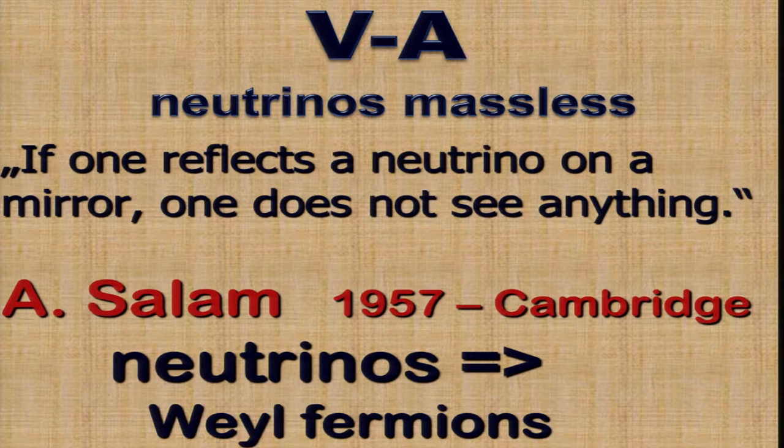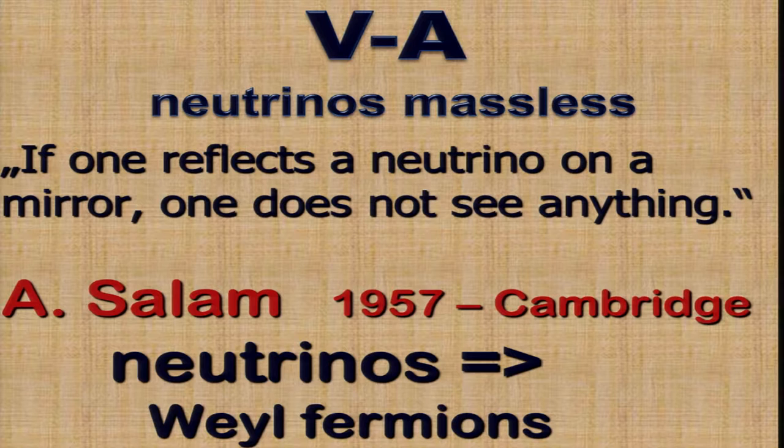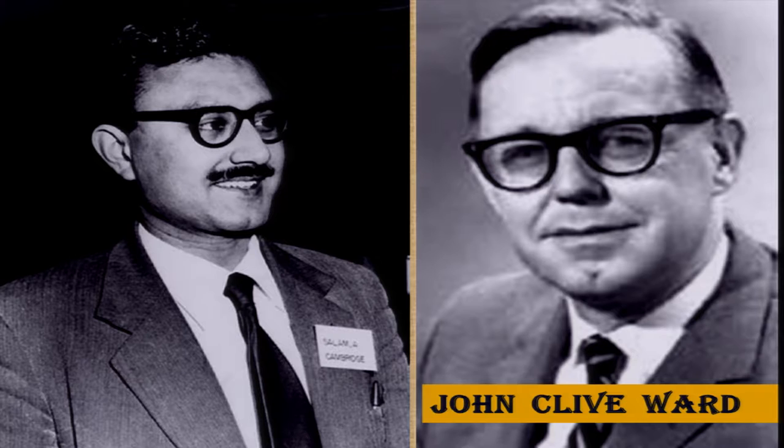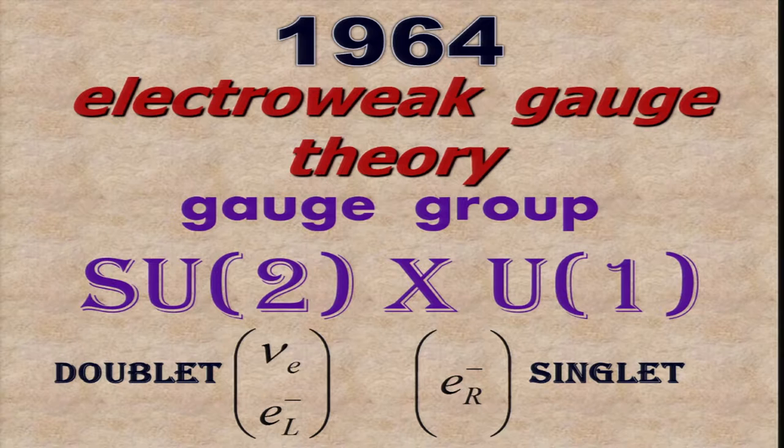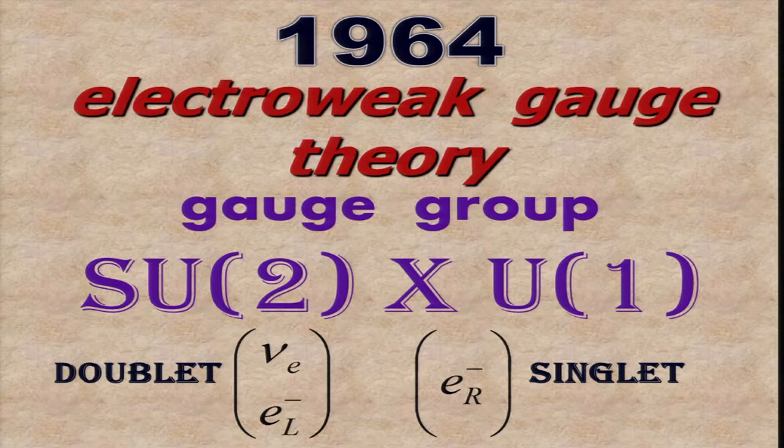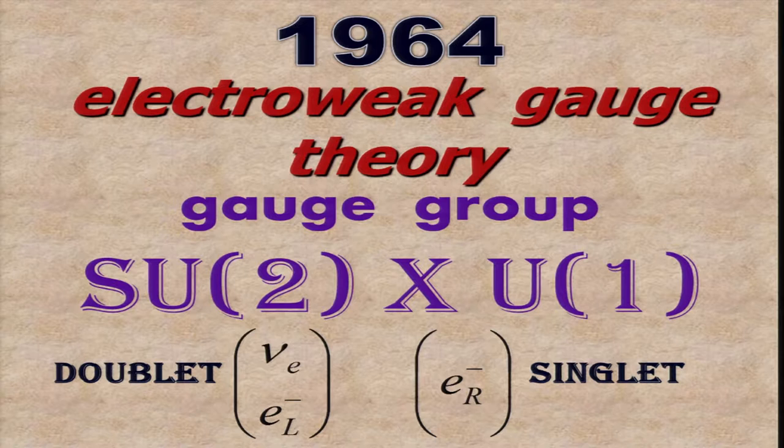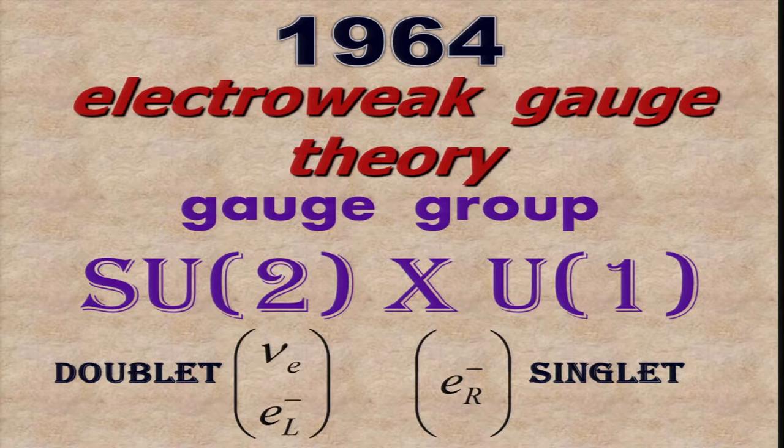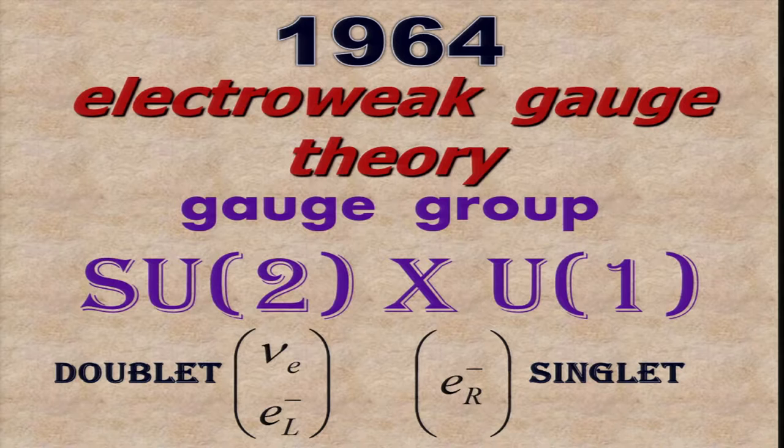From this time on, people usually assumed that neutrinos are exactly massless, which now we know is not the case. Salam continued to work in particular with John Ward. And in 1964, they produced, together with Shelley Glashow on the other side independently, what we call now the electroweak gauge theory. The gauge group was SU(2) times U(1), and the electron and its left-handed neutrinos are a left-handed doublet, and the right-handed electron is just a singlet.